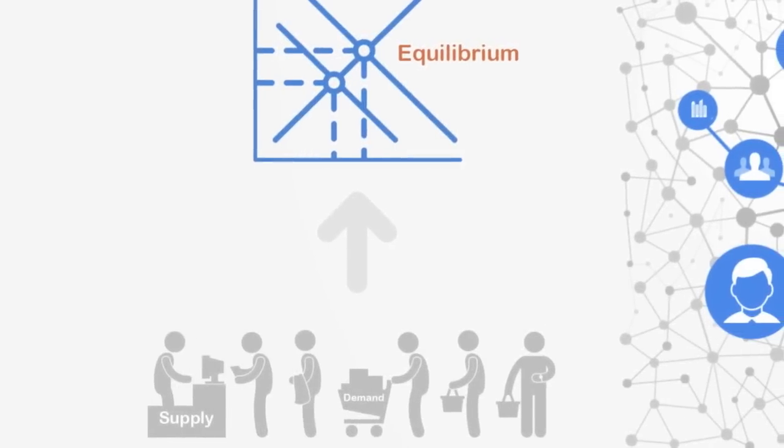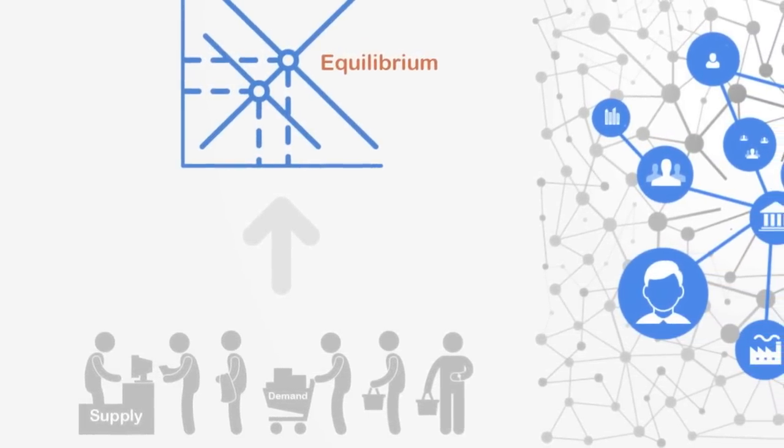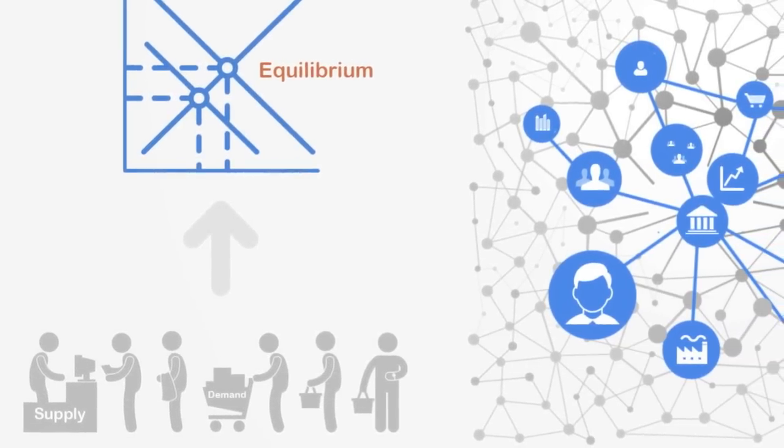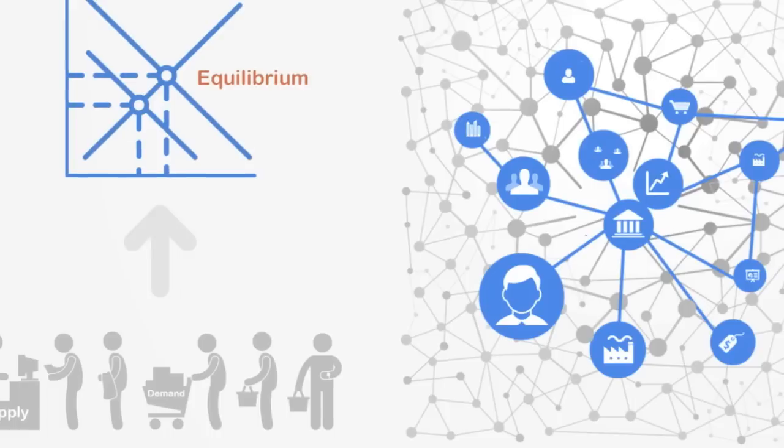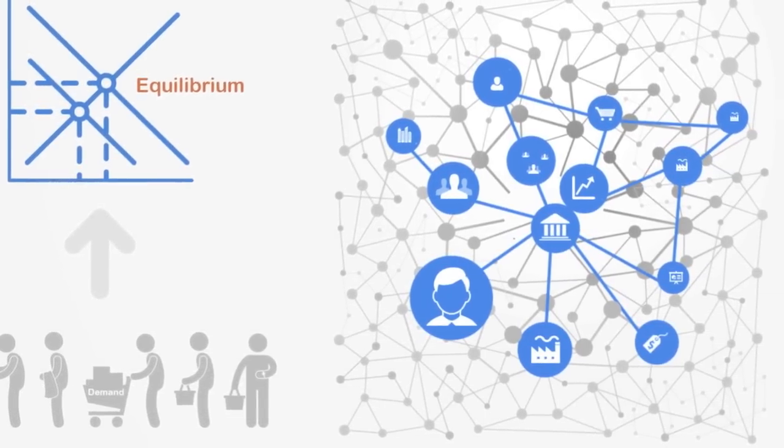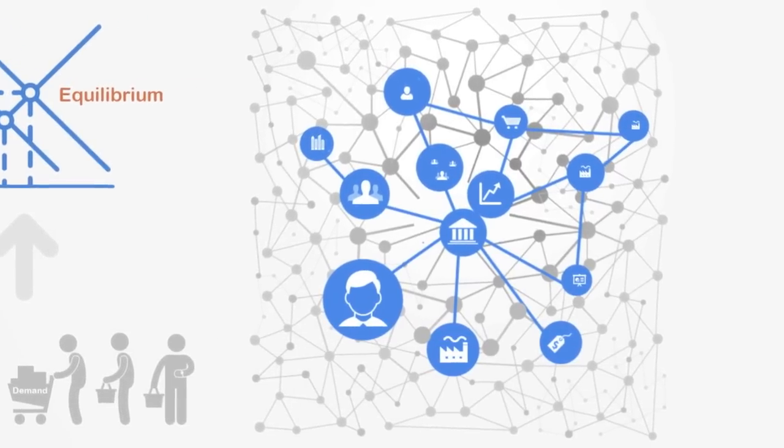Instead of seeing the economy as the product of isolated individuals making rational choices with perfect information that results in so-called efficient markets, complexity economics sees the individual as embedded within social and cultural networks that influence their behavior and with limited information that often leads them to make apparently irrational actions resulting in suboptimal markets.